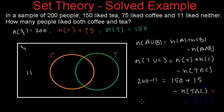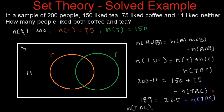200 minus 11 is 189, and this equals 150 plus 75, which is 225, minus N(T intersection C). So N(T intersection C) equals 225 minus 189, which equals 36. So the number of people who like both tea and coffee is 36, and in the Venn diagram this 36 goes in the overlapping area of both circles.